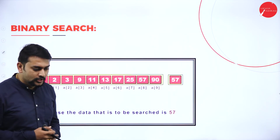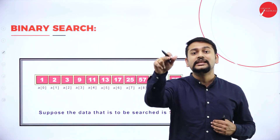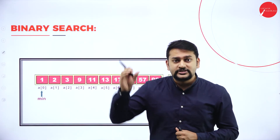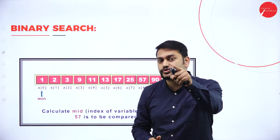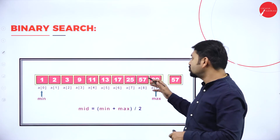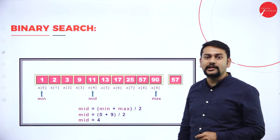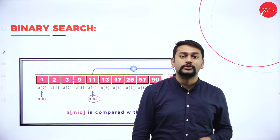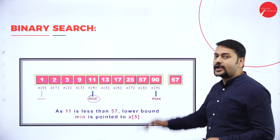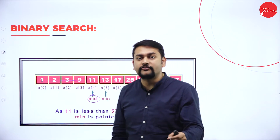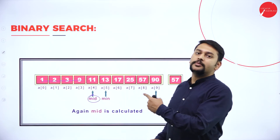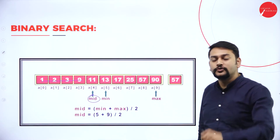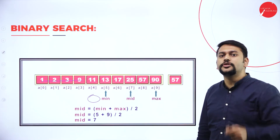Why do we have binary search when we already have linear search? In linear search, I need to compare each and every element — if my element is present at the end, I have to compare all elements, which takes a lot of time. In binary search, I directly calculate the mid value and ignore half the elements. But please remember: I need to have all the values in sorted order to perform binary search, otherwise it is very difficult.